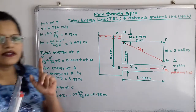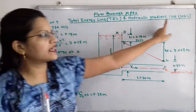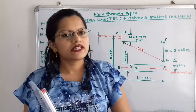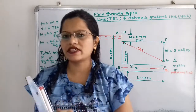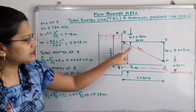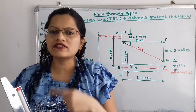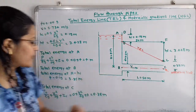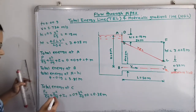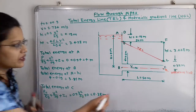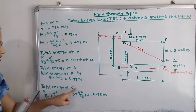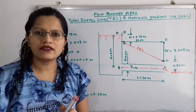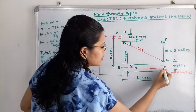The hydraulic gradient line is the sum of pressure head plus datum head. To draw it, we subtract the kinetic head V²/2g from the total energy line. At point G, subtracting V²/2g brings us down to point C. So the HGL passes through point C.